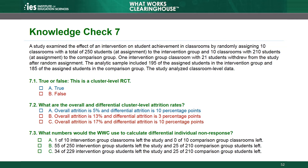B and C are incorrect answers. What numbers would the WWC use to calculate differential individual non-response? A. 1 of 10 intervention group classrooms left the study and 0 of 10 comparison group classrooms left. B. 55 of 250 intervention group students left the study and 25 of 210 comparison group students left. C. 34 of 229 intervention group students left the study and 25 of 210 comparison students left.